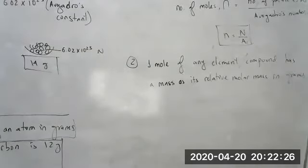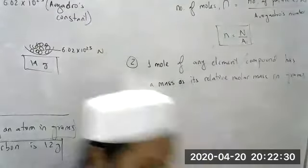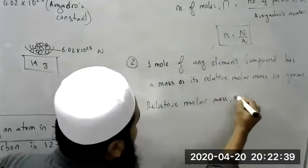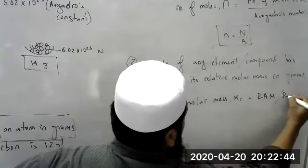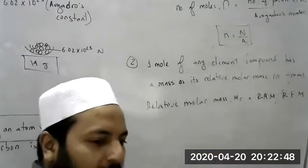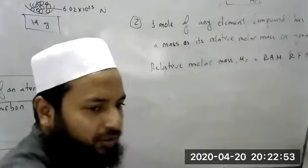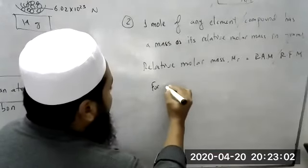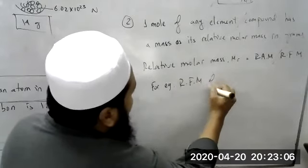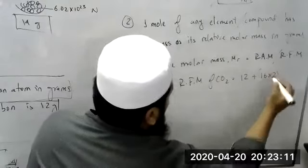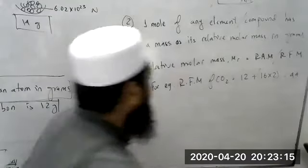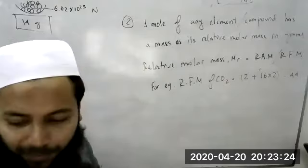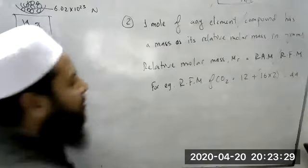Relative molar mass MR equals RAM or RFM — relative formula mass. We have just studied RAM. RFM is where you add up the masses of a compound. For example, RFM of carbon dioxide equals 12 plus 16 × 2, which is 44. So RFM and molar mass RM both mean the same thing — they both mean MR.